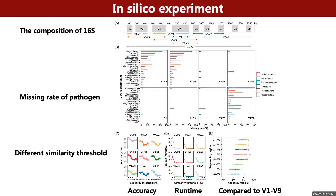We also assessed the accuracy and runtime of short-read sequencing regions under five similarity thresholds. The accuracy and runtime of each variable region vary under different thresholds. Most variable regions performed the worst at the threshold of 80%, but that threshold also required the longest runtime. In short-read sequencing regions, V1 to V3 and V3 to V4 achieved the best accuracy.